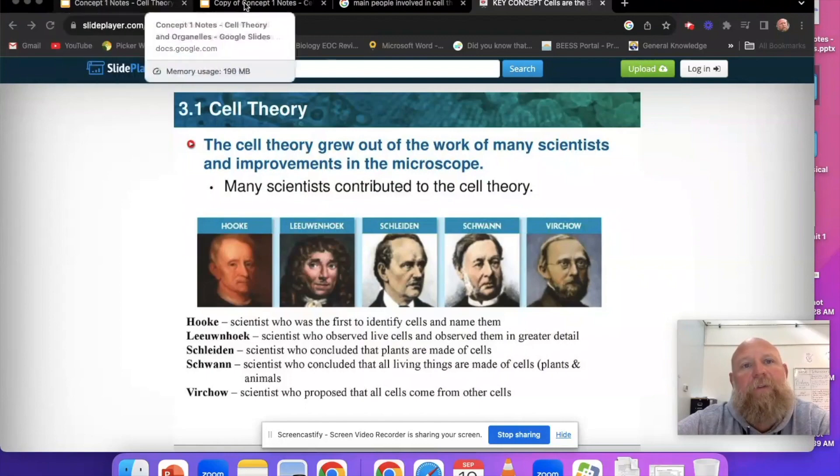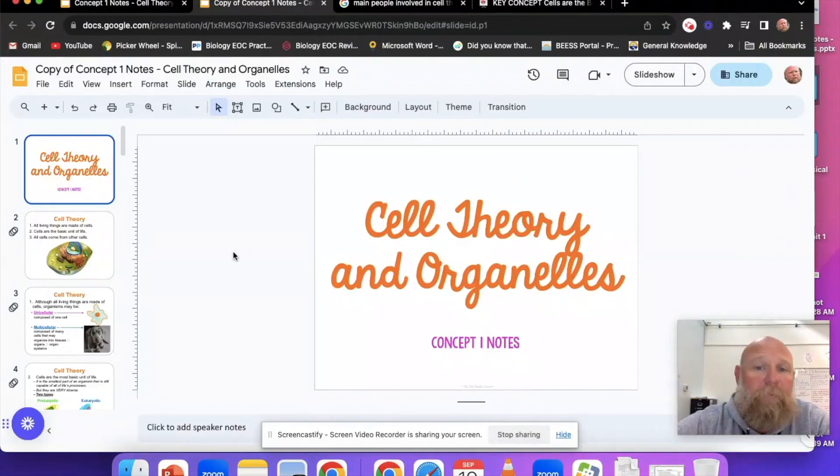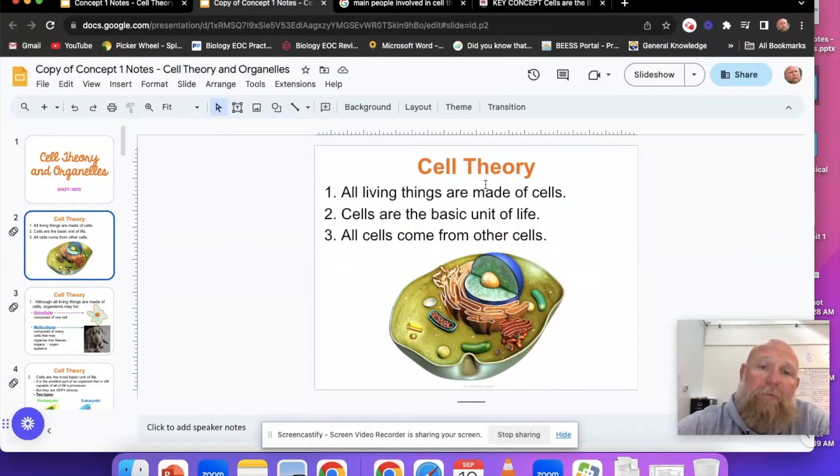So with that said, let's jump back in here to the notes that we went over. We see right off the bat that we have cell theory, and it's composed of three specific parts: all living things are made of cells, cells are the basic unit of life, and all cells come from other cells. These are pretty self-explanatory, kind of intuitive statements.